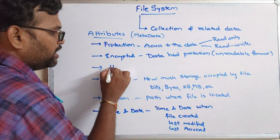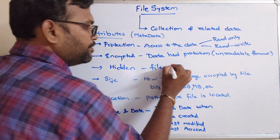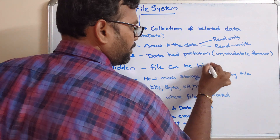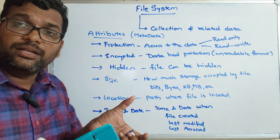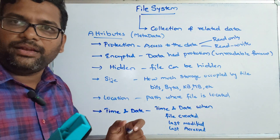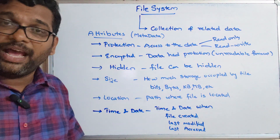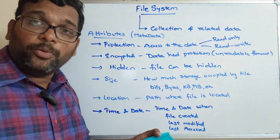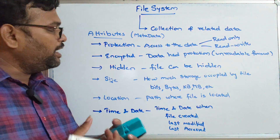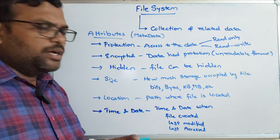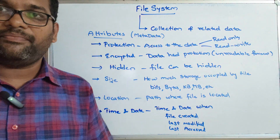Similarly, a file can be hidden. You can find all these attributes for any kind of file in an operating system — go to file and folder options and there you can see all these things. We can protect the file and also hide the file. These are all the major attributes that represent a file.